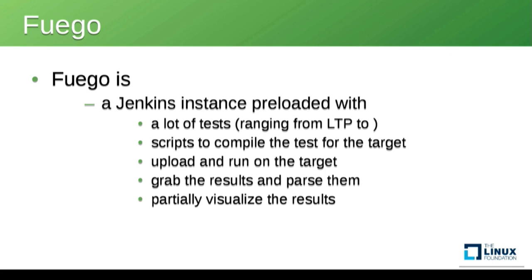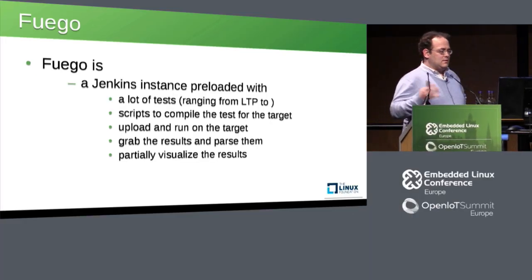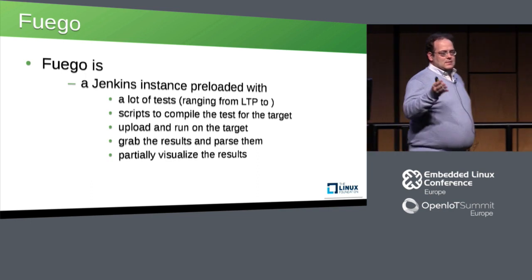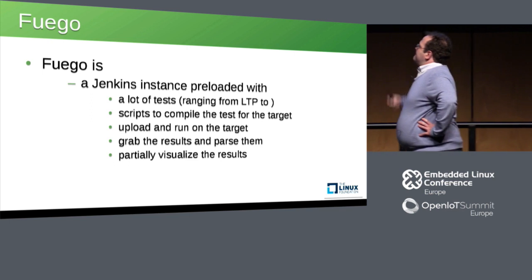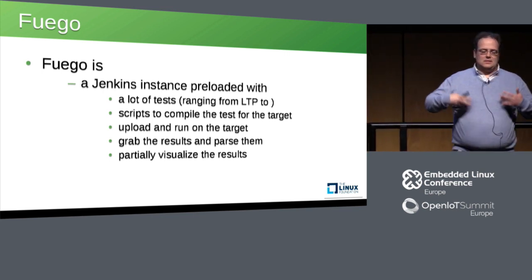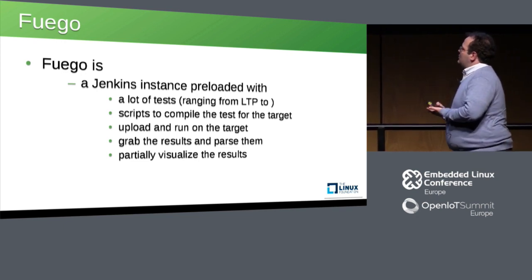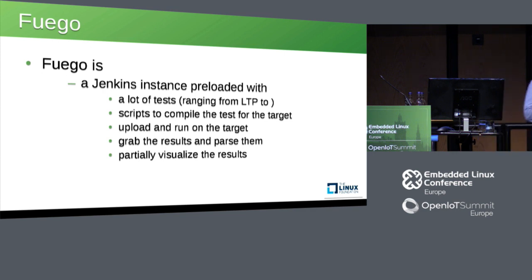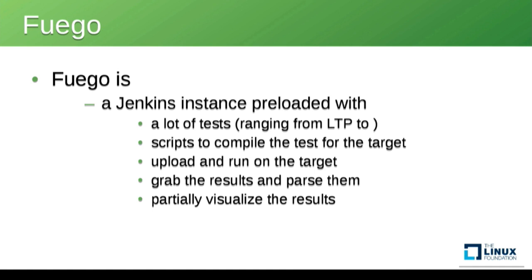If you set up Fuego, you get a Jenkins instance preloaded with a lot of tests, ranging from LTP to all kinds of stuff, including simple stress tests. We have a command-line tool that lets us instantiate those tests. In principle, we have scripts to compile the tests for the target — we define what the target is and what compiler to use. It will then connect to the target, upload and run the tests on the target, grab the results, and has the capability to parse and visualize the results for the tests where that is configured.